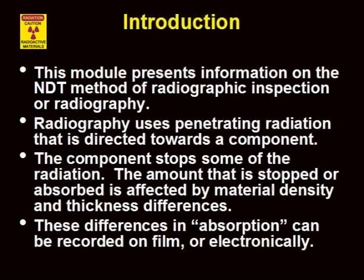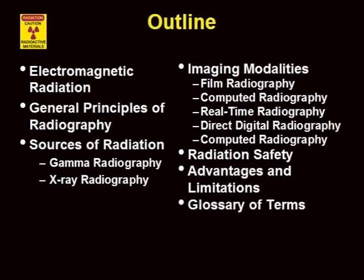This presentation will discuss radiographic inspection or radiography. Most of us are familiar with the concept of penetrating radiation to create images of internal structure. The method works because material density and thickness cause radiation to absorb the incident energy, creating shadow graphs on film or digital detectors. We will discuss electromagnetic radiation, the principles of radiography, the sources of radiation, and various methods of making images. Since radiation is dangerous to living things, we will also discuss radiation safety, the advantages and limitations of radiography, and a glossary of terms.